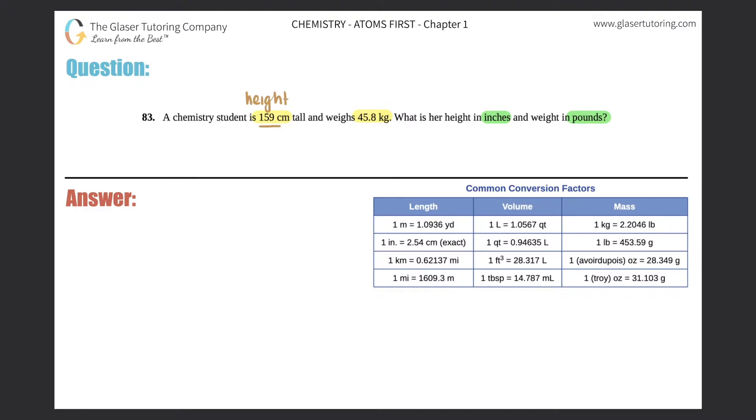They want to know what the height is in inches, so it looks like we just have to convert centimeters into inches and then kilograms to pounds. So it's just two direct conversions. Let's give it a go. Let's start with the height, so I want to convert 159 centimeters into inches.